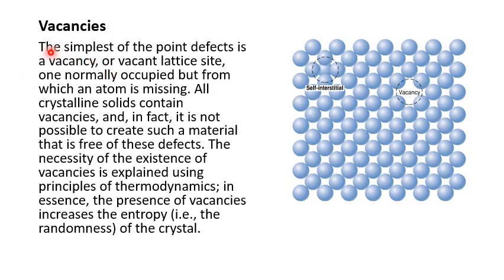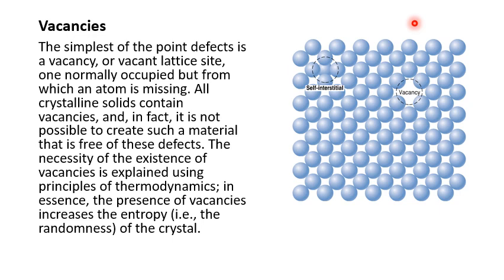Starting with point defects — vacancies is the simplest sort. Vacancies means a vacant lattice position, or vacant lattice site, or unoccupied lattice site — a lattice site with a missing atom. It is impossible to produce a solid without these sorts of defects.